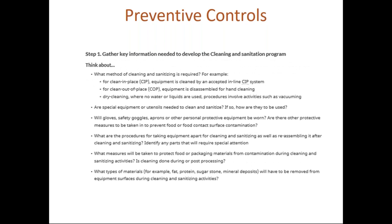The first thing you want to do is gather information needed to develop your cleaning and sanitation program. You need to think about what areas need to be cleaned, whether different areas have different cleaning requirements — dry processing versus wet processing, storage areas, coolers, freezers, sanitation rooms. What equipment needs to be cleaned? Does the equipment require assembly and disassembly? Are there special cleaning requirements? Is cleaning done during production, and if so, how are you going to protect food and packaging materials while cleaning? The answers to these things need to be in your preventive control for cleaning and sanitation.